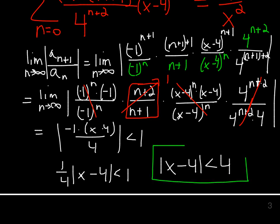And technically, we need to check the endpoints. You can do that, and you'll see that both endpoints, 8 and 0, would diverge. And so absolute value of x minus 4...